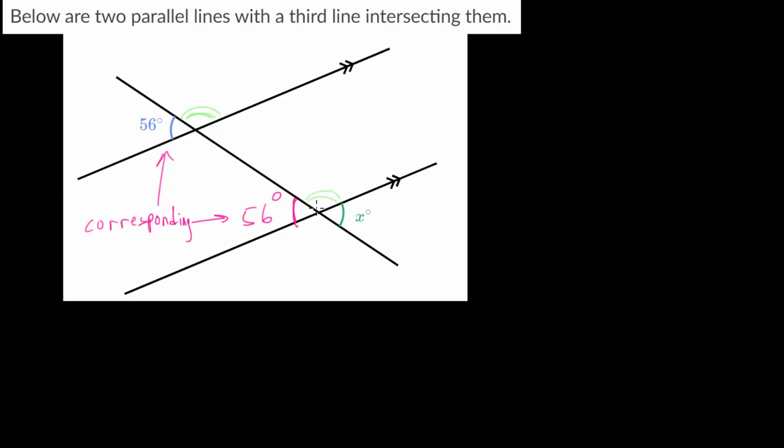And what we can also see is that this 56 degree angle here is a vertical angle to this angle x. And vertical angles, these are always equal. So therefore, x, or x degrees, is 56 degrees. And we found our missing angle.